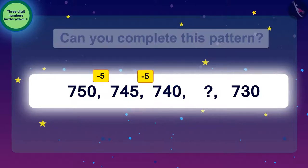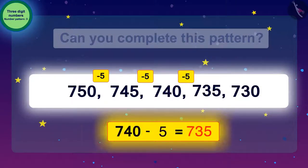Now, if we want to know the next number after 740, we have to subtract 5 again, which will give us 735. This way, the number to be filled in the blank is 735, which is 5 less than 740.